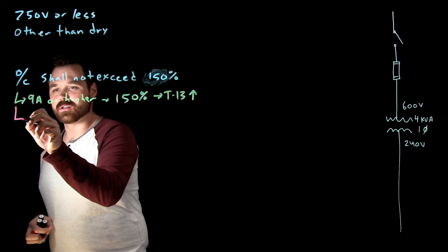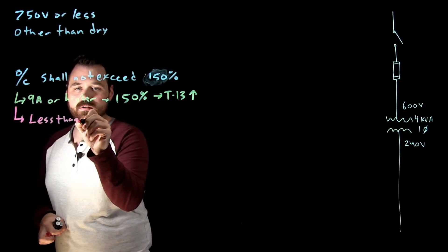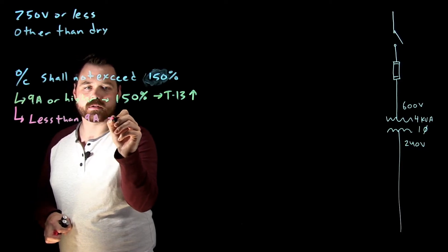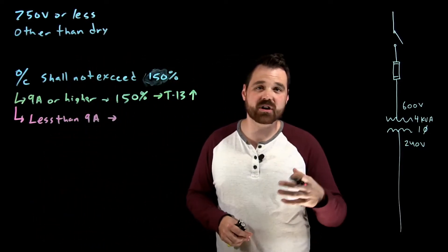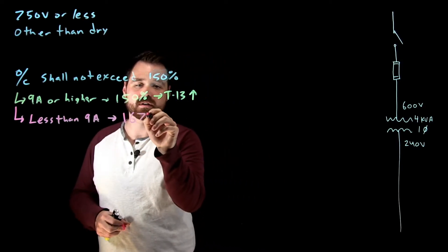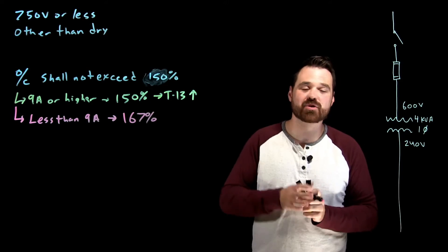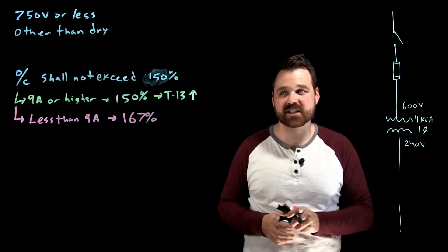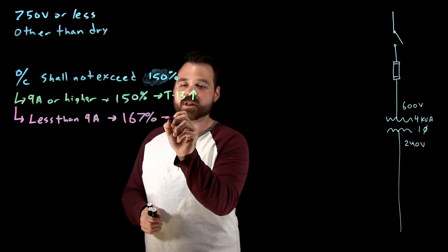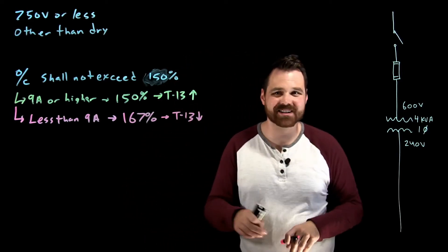Then it goes on to say, if you are less than nine amps, you can actually go up to 167% of the rated current. But it says you shall not exceed 167%. Which means when we go to table 13, we would actually have to go down in size.